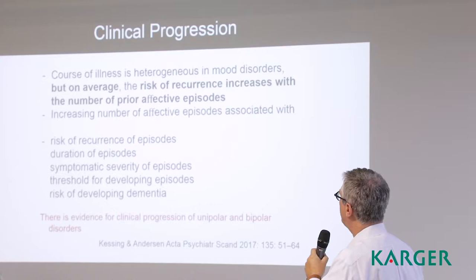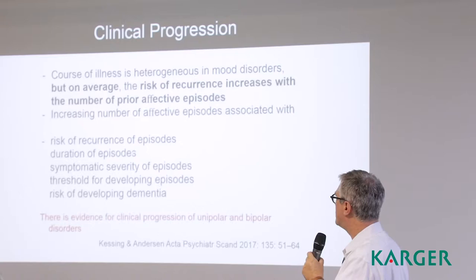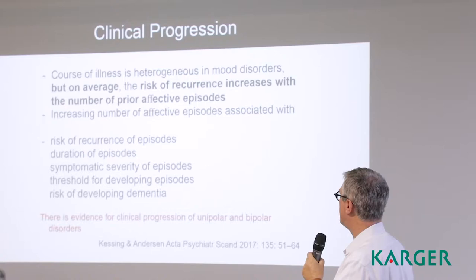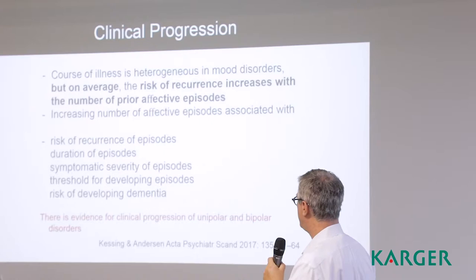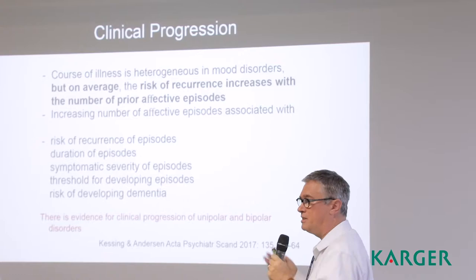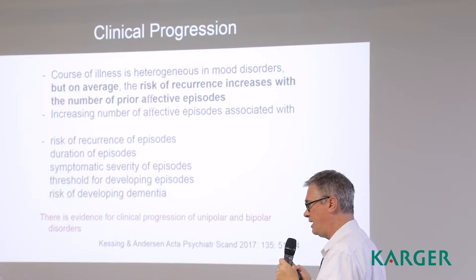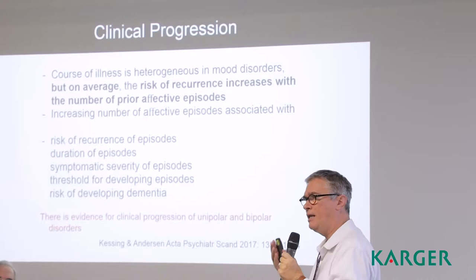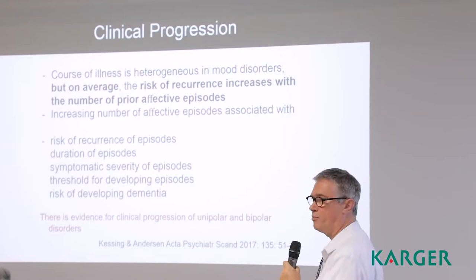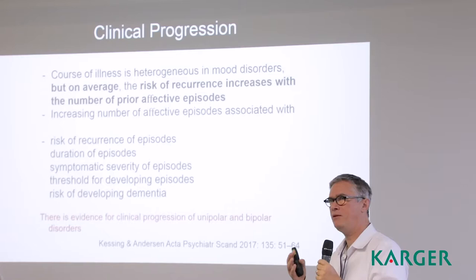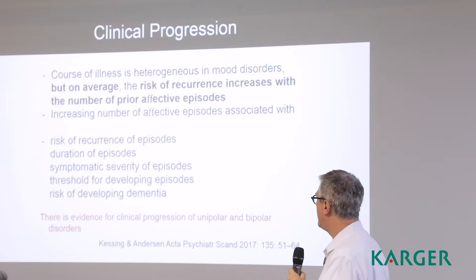Increasing numbers of affective episodes is associated with increased risk of recurrence of episodes, increased duration of episodes, symptomatic severity of episodes, a lower threshold for developing episodes, and, importantly, risk of developing dementia later on in life. So we have to deal with that. Now we've changed in a way what we mean by neuro progression. Neuro progression is what happens in the brain, or perhaps in the body, that provides the biological basis for clinical progression. So when we talk about routes potentially implicated in neuro progression — when we talk about inflammation — we are talking about the pathophysiology of this.